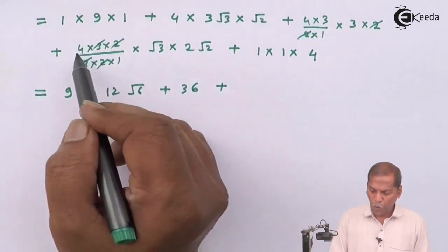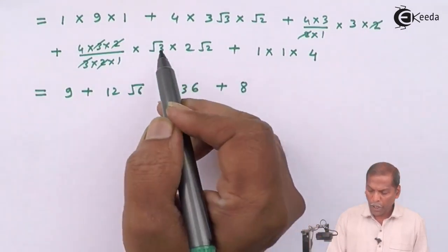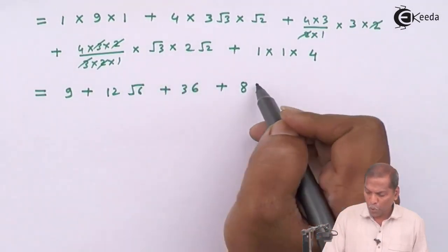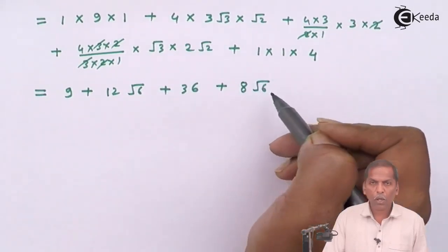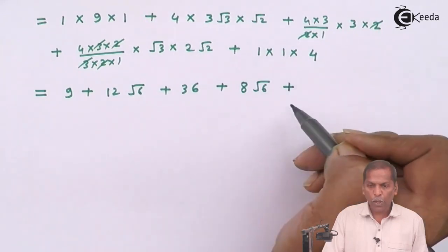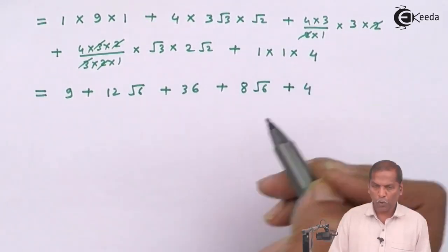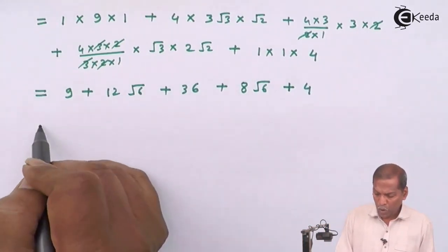At the same time 2 from numerator and denominator, then we multiply the remaining terms so that gives us 4 into 2, 8, and root 3 into root 2 so that uses root 6.